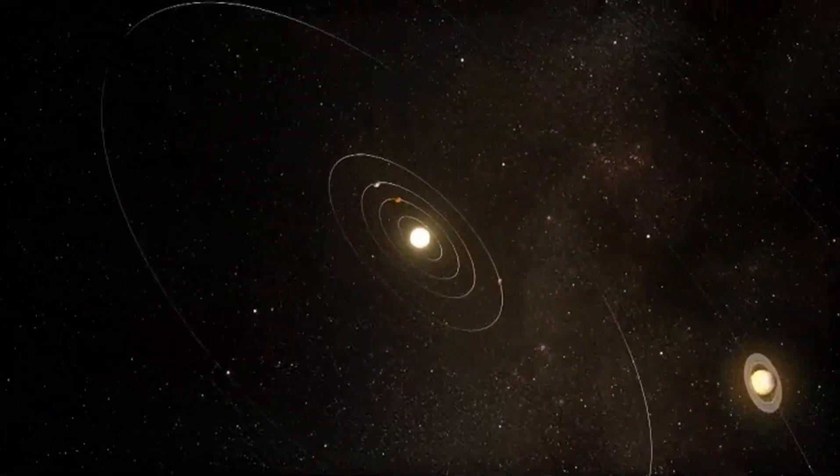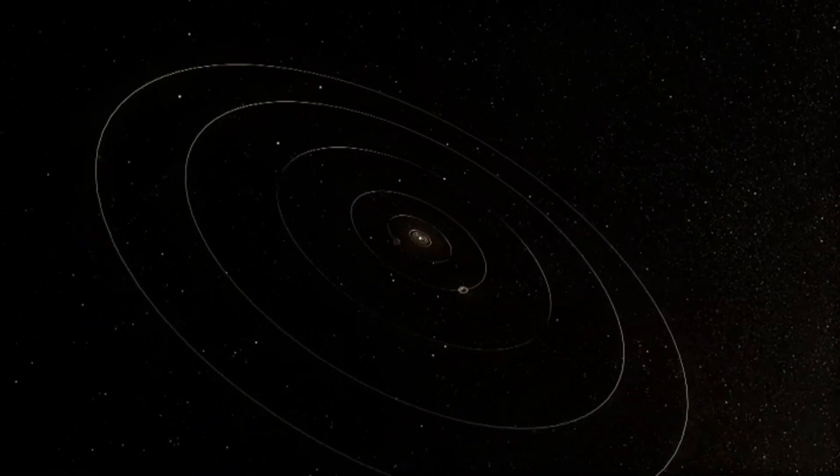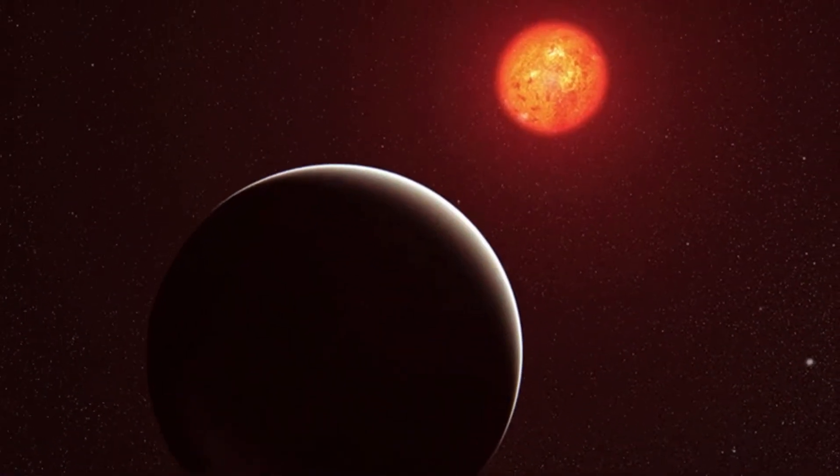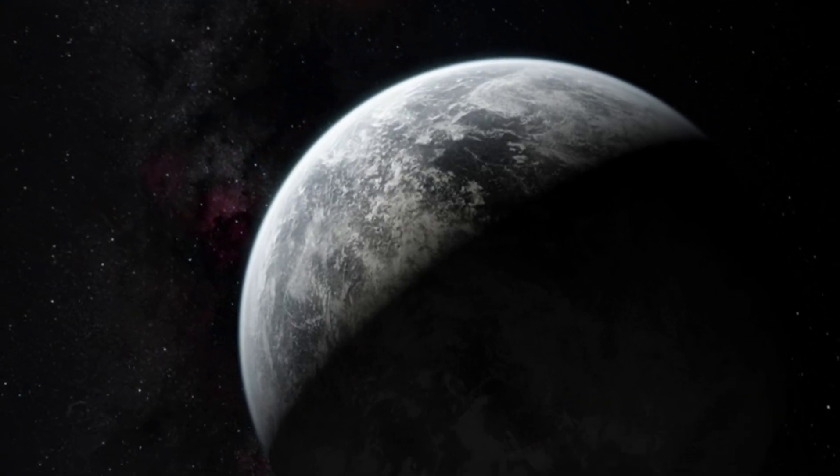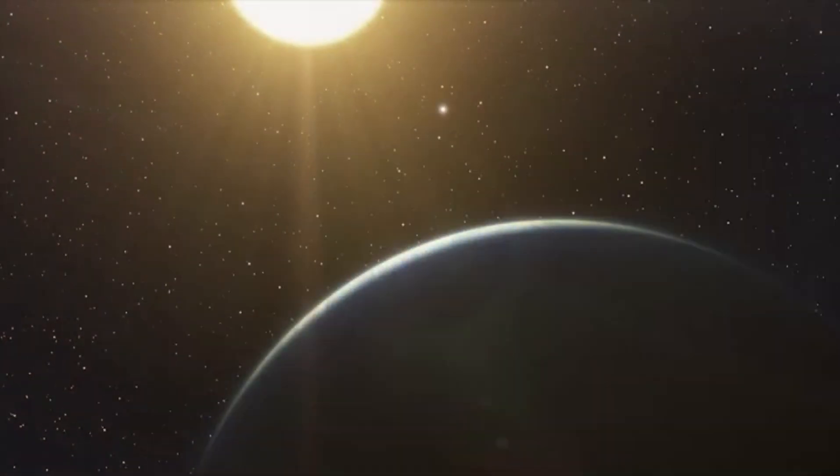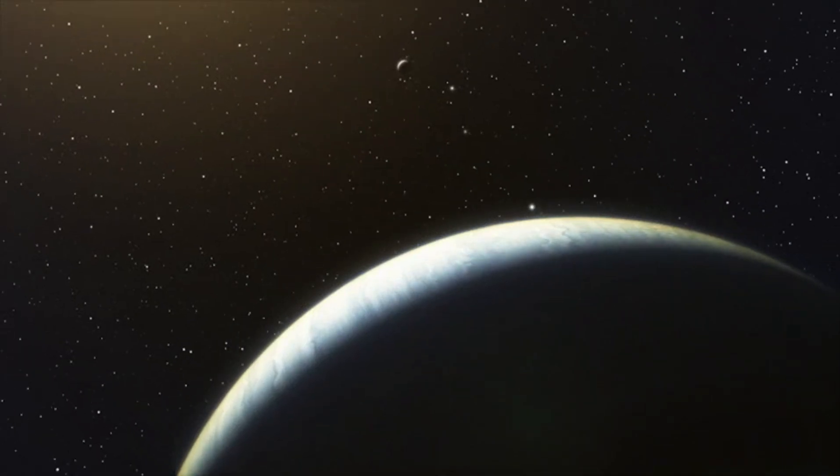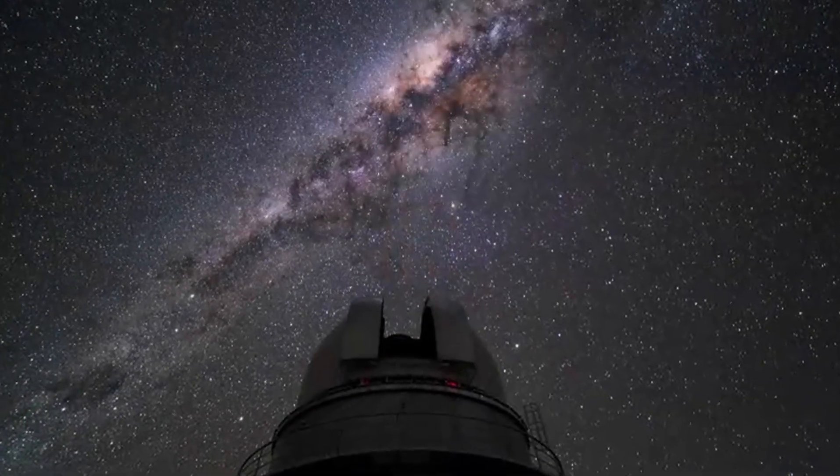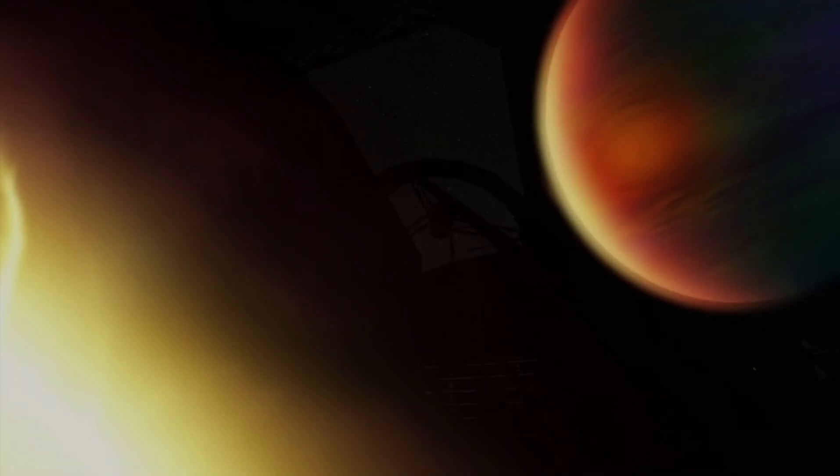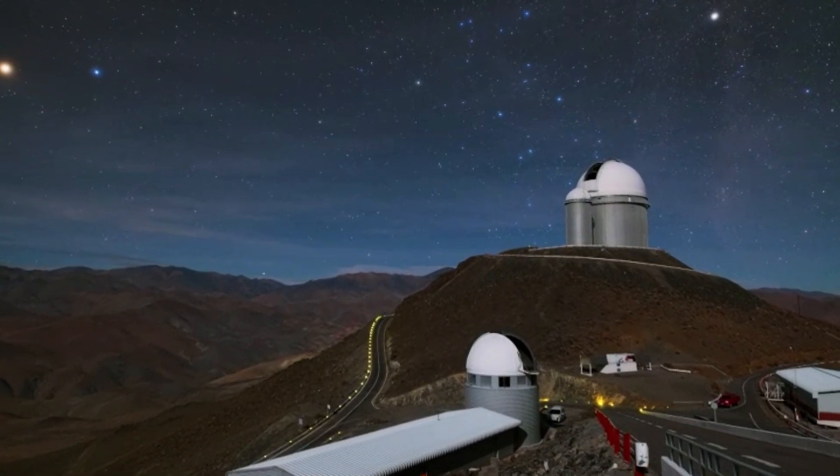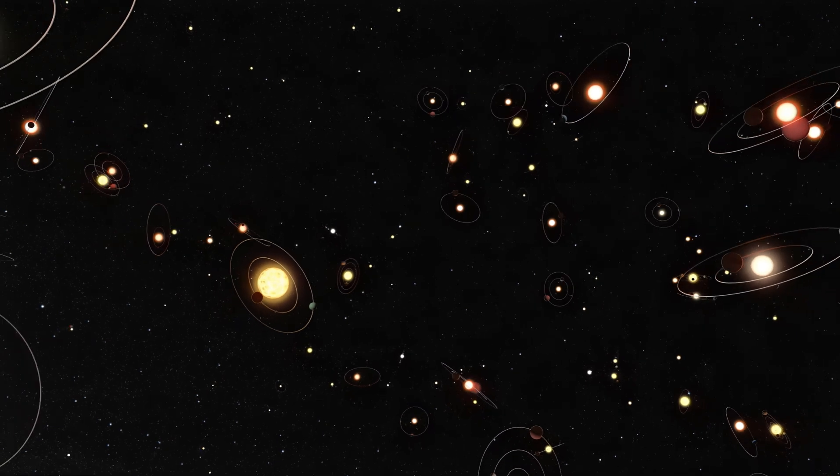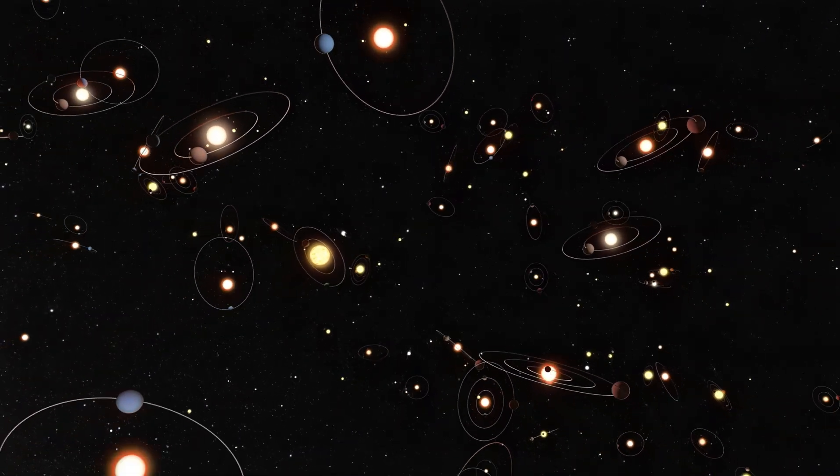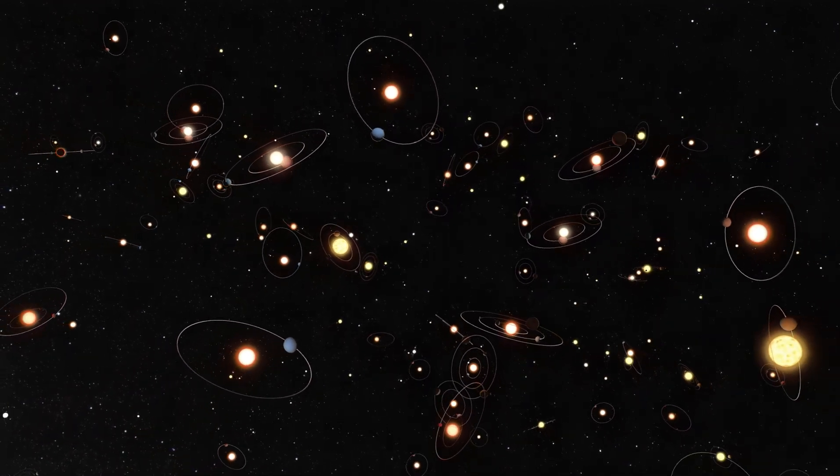There is also the big challenge this discovery presents to our current understanding of where life can exist. For the longest time, scientists thought that planets orbiting red dwarf stars were not exactly life-friendly. These stars often unleash powerful solar flares, which could easily wipe out an atmosphere and leave a planet barren. Yet here we are, with potential evidence that not only life but intelligent life could be thriving in such conditions. If that's the case, it would completely change how we think about where life might exist in the universe. Red dwarfs are actually the most common type of star in our galaxy. And if life can thrive on Proxima B, that means there could be many other planets around red dwarfs where life could also exist. Suddenly, the universe is looking a lot more crowded. Even the places we once thought were unlikely candidates for life might need a second look.